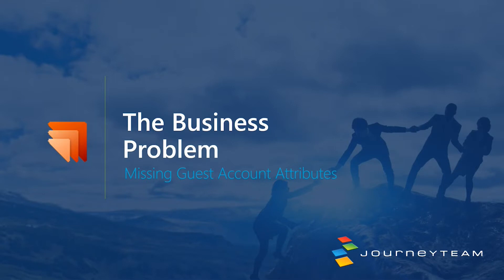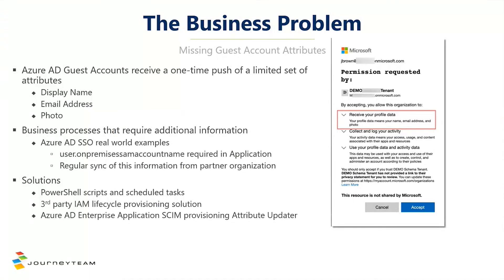The big part to know here is that guest objects are awesome. They empower your organization to do a lot of things like Teams, and add people from other organizations to access content and work with your organization in really interesting ways that can empower your business. What we've learned, though, is that guest accounts in Azure AD receive a one-time push of a very limited set of attributes. In Azure AD and Active Directory, we're very used to seeing a lot of attributes, including titles and on-premise Sam account names and additional information like groups.